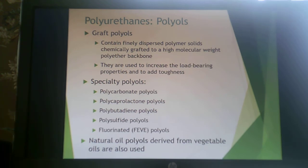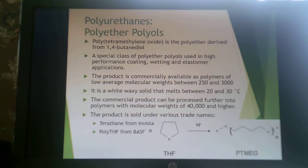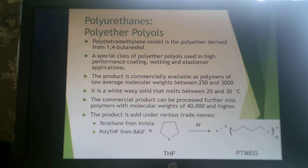At KPRC, epoxidized soybean oil is used to make polyols with lots of hydroxyl groups, tailored for flexible foams, rigid foams, or anything in between — and because it doesn't come from petrochemicals, it's more environmentally friendly and sustainable. An example of a polyether polyol is polytetramethylene oxide (PTMO), used in high-performance coatings, wetting applications, and elastomers. It is available at low molecular weights between 250 and 3,000 as a waxy solid, and can be further processed into higher molecular weight polymers. It is derived from THF, which can come from oat hulls — a sustainable resource — and is marketed as Terathane by Invista or Poly-THF by BASF.